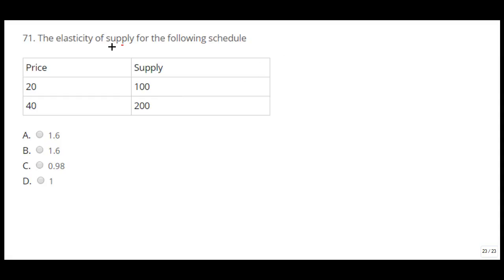Let us see the question. Here they are asking us to compute the elasticity of supply. This is the schedule: price and supply. At price 20, supply is 100. At price 40, supply is 200. What would be the elasticity?